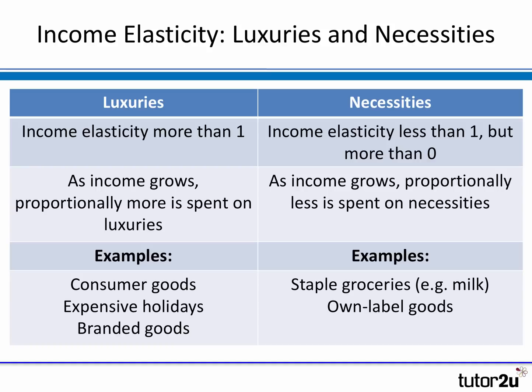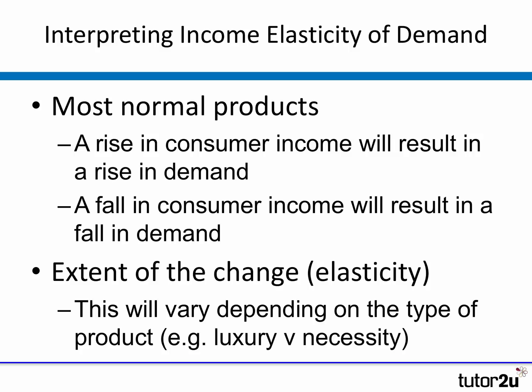What do we mean by luxuries and necessities? Luxuries might include things like branded goods — as your income rises, you're more able to afford branded products and maybe you spend proportionately more of the extra money on those. As the amount in your pocket increases, you're going to spend proportionately less on necessities — the things you had to buy in the first place but won't buy much more of. So things like milk, or discounted and unlabeled products. Most normal products see an increase in demand when there is an increase in income — the only distinction is how much the increase is. A rise in income results in a rise in demand, and similarly if incomes start falling, as happens during a recession, we see a fall in demand.